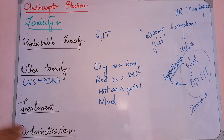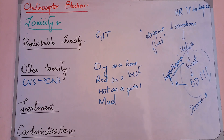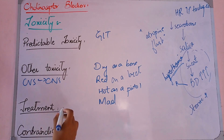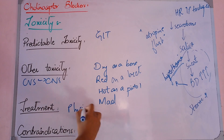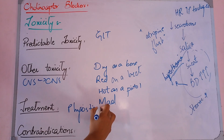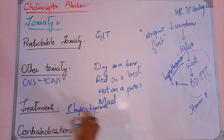The treatment of these toxicities includes: for hyperthermia, we give a cooling blanket; for tachycardia, we treat accordingly. The antidote is physostigmine, which is a cholinomimetic drug that reverses the toxicity.